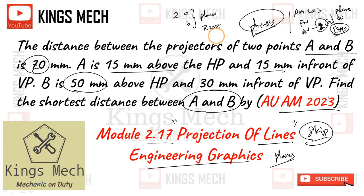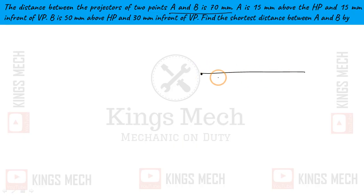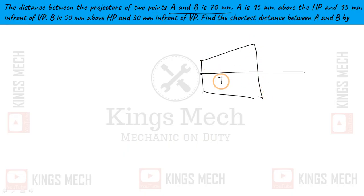We have solved problems on Projection of Lines. The distance between projectors of points A and B is 70 mm. So we have one line starting from A and one from B.